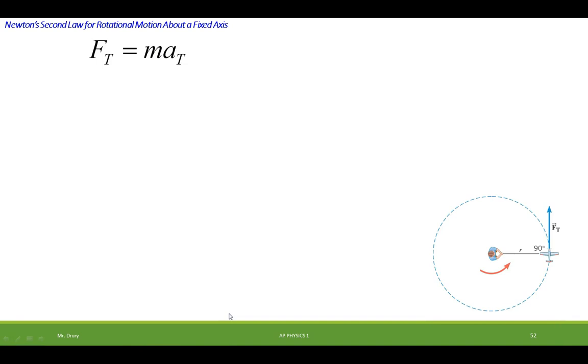So we start with Newton's second law. Here's the force tangential and the acceleration tangential and here's the mass of the object. But we also know that torque is equal to this force times this distance and it's a 90 degree angle so we don't have to worry about any differences here in angles because they're perpendicular to each other.